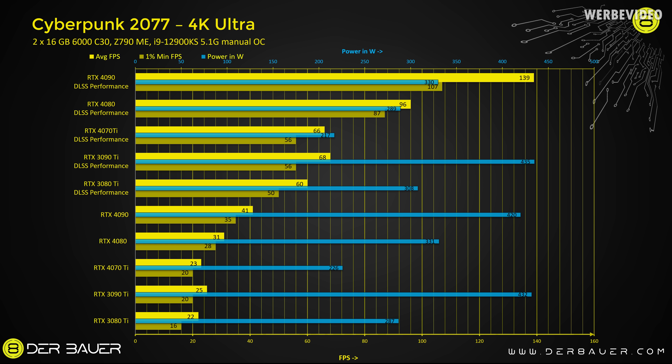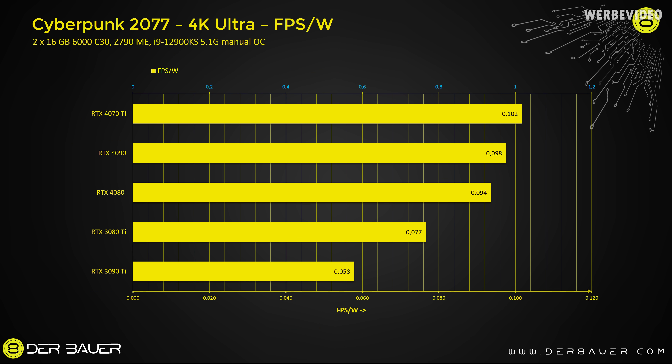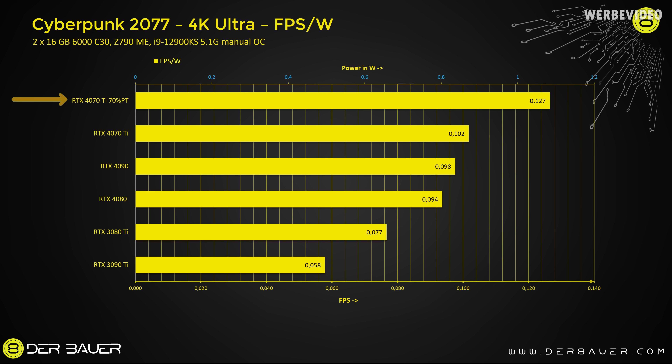Looking at the FPS per Watt chart, the 4070 Ti benefits from its smaller chip consuming less power than bigger cards, and it can even beat the RTX 4090 in efficiency at 0.102 FPS per Watt. Lowering the power target to 70% further increases efficiency, reaching 0.13 FPS per Watt. We'll get into more detail on that in a moment.